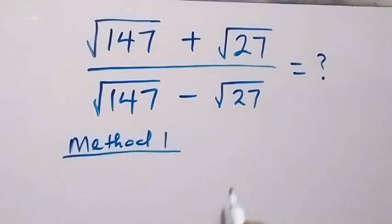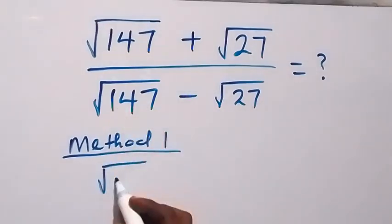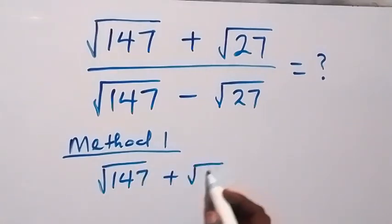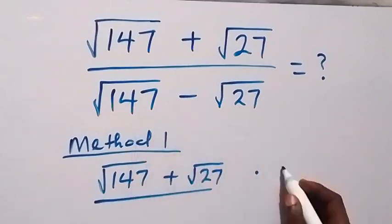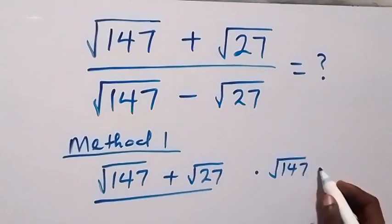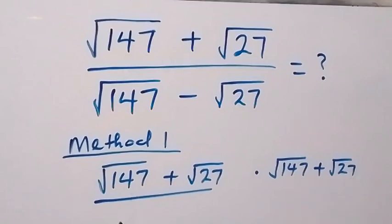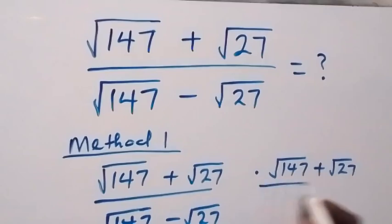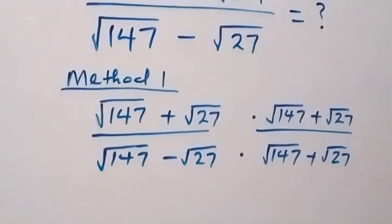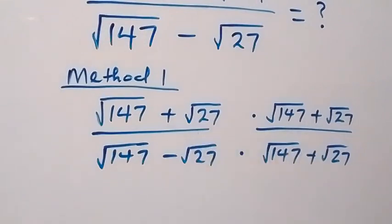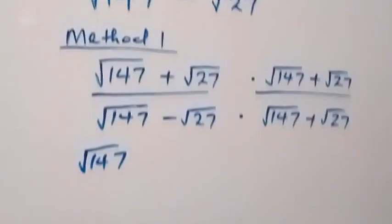We rationalize this surd and multiply with the conjugate. Here we have root 147 plus root 27. Then multiply by what we have here. The denominator is root 147 plus root 27. Then here in the denominator we have root 147 minus root 27, and we also multiply the denominator like that, which is root 147 plus root 27.